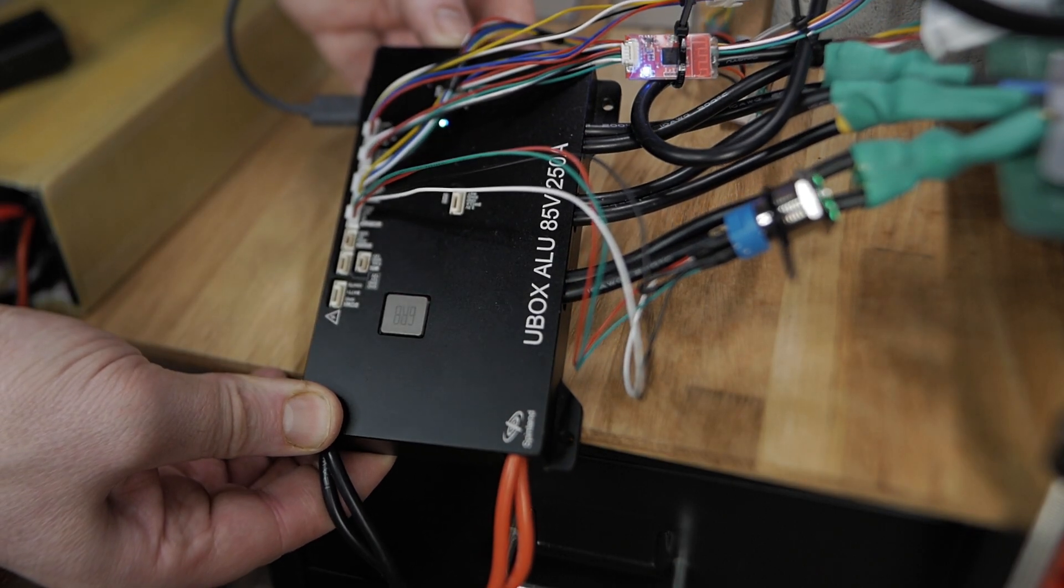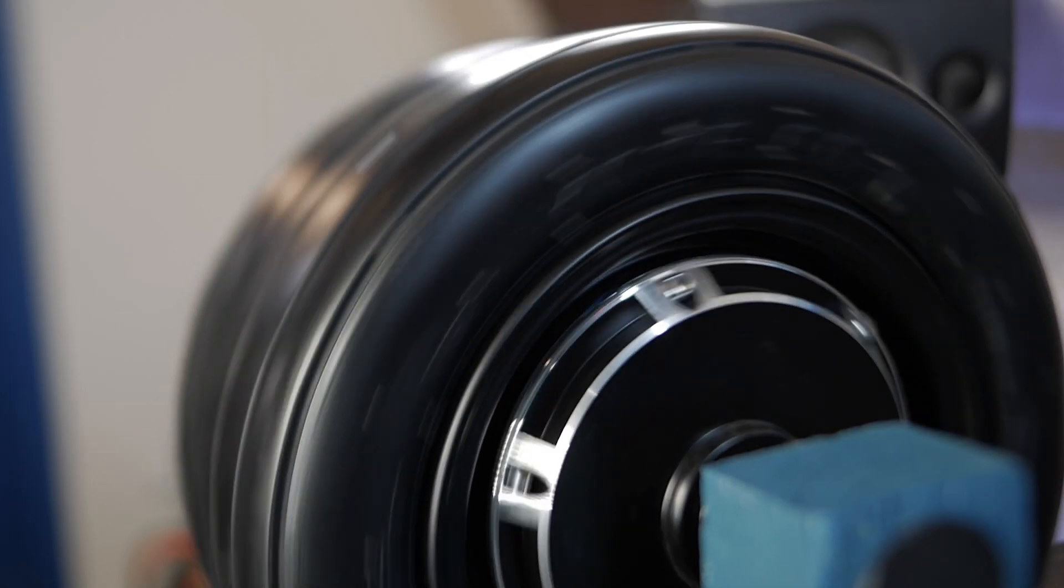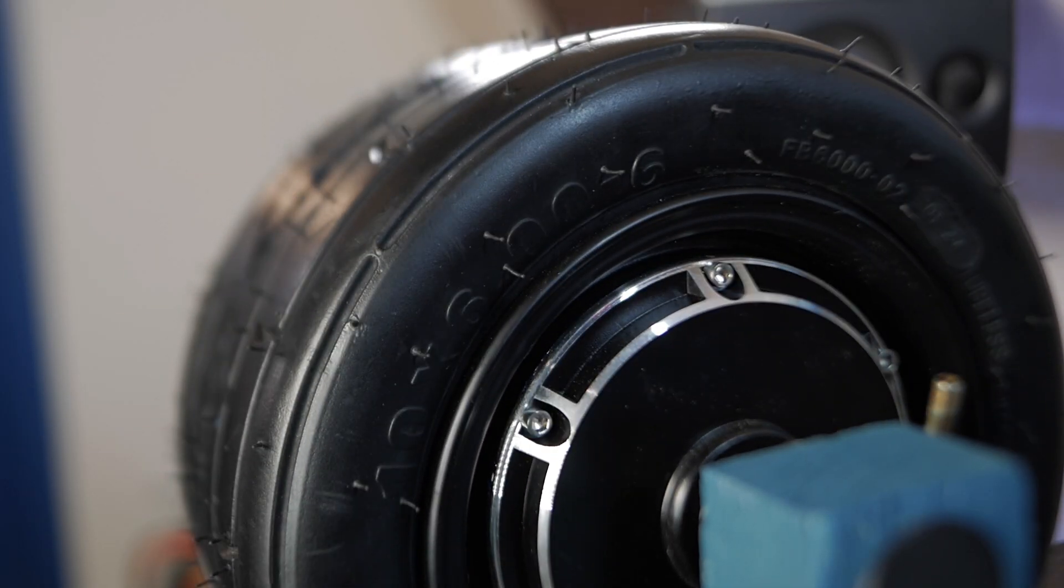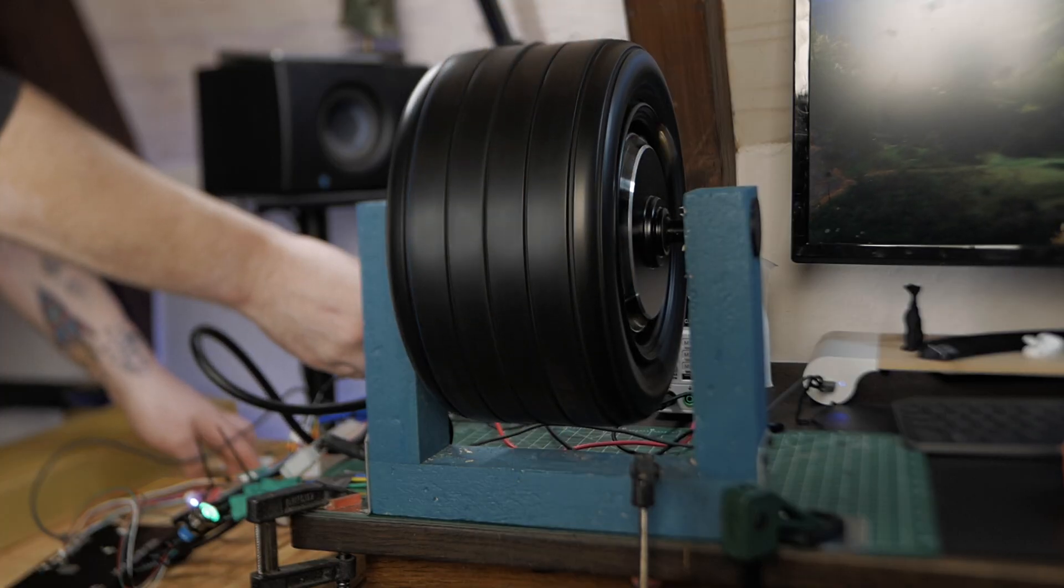To start riding, I tilt the board which makes the motor accelerate. This works because the motor controller has a built-in gyroscope that detects when you lean forward or backward and instantly adjusts the speed.